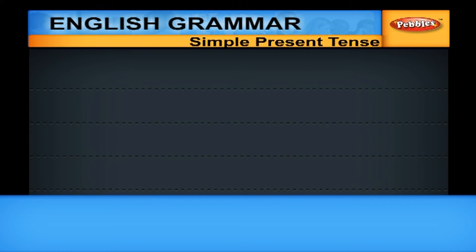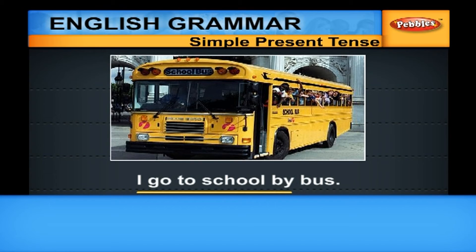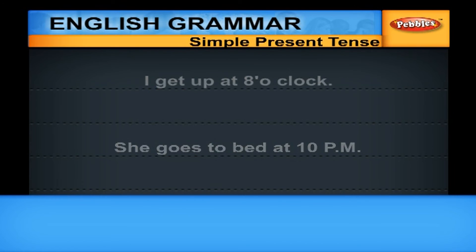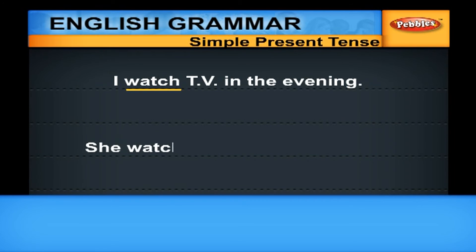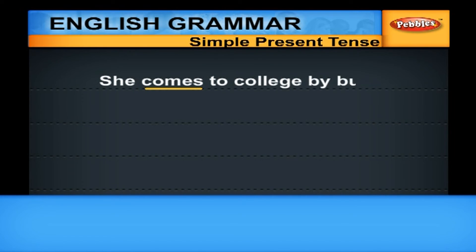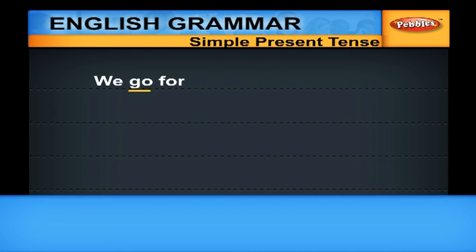So, where do you use the simple present aspect? Normally, when we use simple present, we are not going to talk about an action that is in progress. We talk about an action that is habitual — that is regular, that we repeat often. For example: I GO TO SCHOOL BY BUS means you go to school regularly by bus — it is a habitual action. I GET UP AT 8 O'CLOCK. SHE GOES TO BED AT 10 P.M. I WATCH TV IN THE EVENING. SHE WATCHES TV IN THE MORNING. SHE COMES TO COLLEGE BY BUS. I COME TO COLLEGE BY TRAIN.